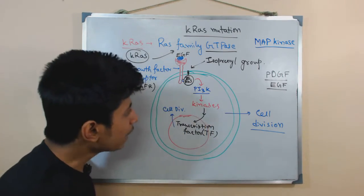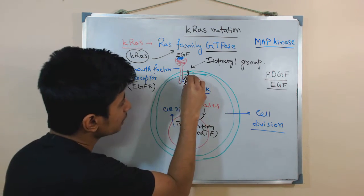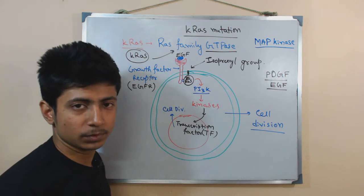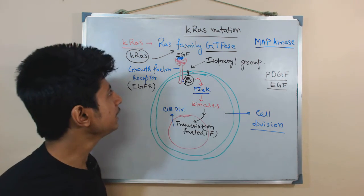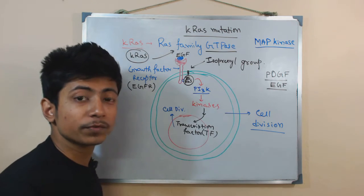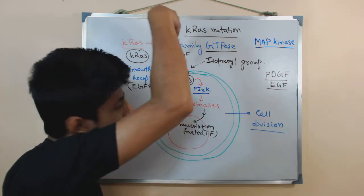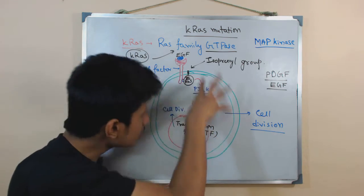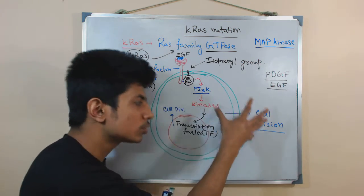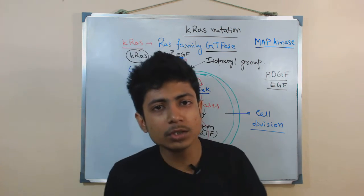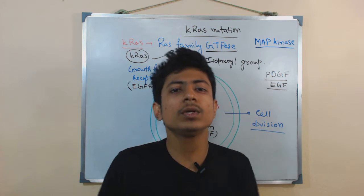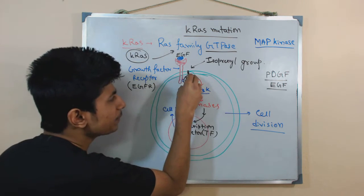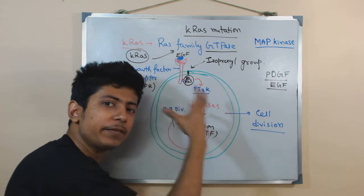This is the general function of RAS — you can see its position and what it does in this pathway. Now, the problem: if there is any mutation in RAS and RAS becomes non-functional, it will not recognize the Epidermal Growth Factor anymore. Even if EGF is sitting on the receptor, the non-functional RAS will not act properly, the process will stop, and the cell will stop dividing — creating problems because if cells stop dividing, tissue will not form.